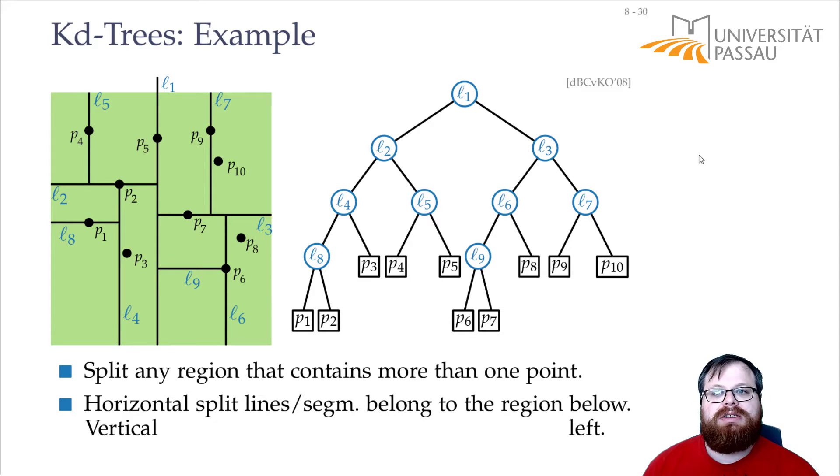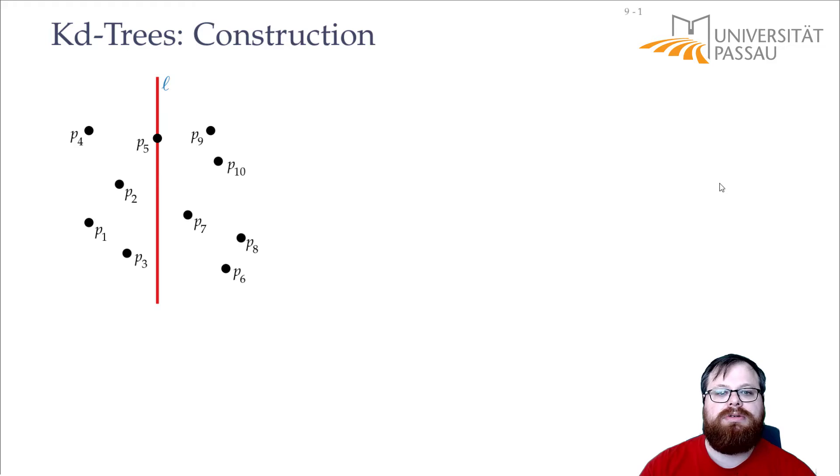We want to now write in pseudocode our algorithm, how we can construct this KD tree from a set of points. We want to do that recursively. So we want to build a function, build KD tree, that has some points and knows which depth of the algorithm it is right now.